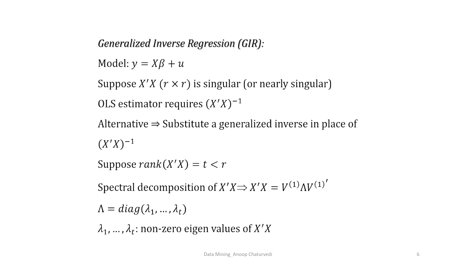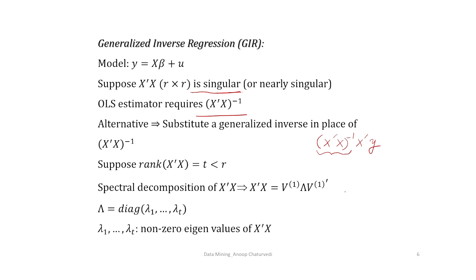Now we consider generalized inverse regression. We consider the model y = Xβ + ε, assuming the intercept term is 0. Suppose X'X, which is of order r×r, is singular or nearly singular. Then the OLS estimator requires (X'X) inverse. If X'X is singular, you cannot obtain (X'X) inverse. One alternative is to use the generalized inverse in place of (X'X) inverse, replacing it in the expression for the least squares estimator.